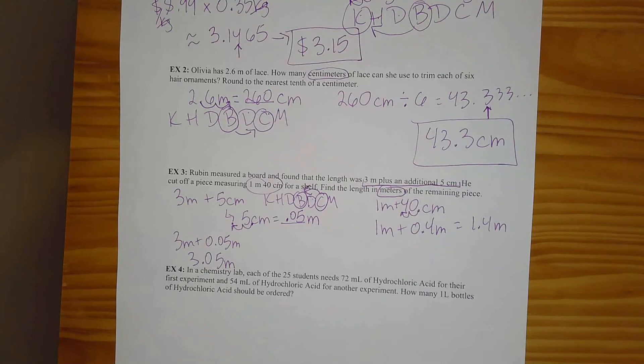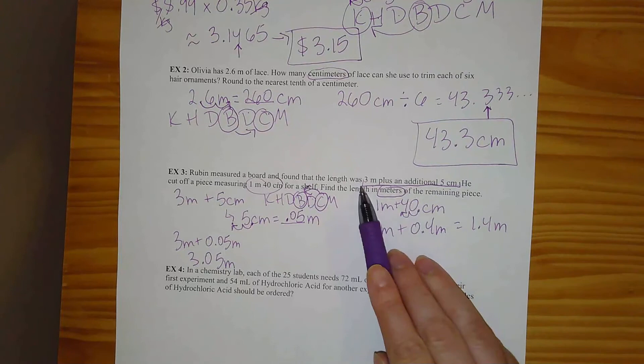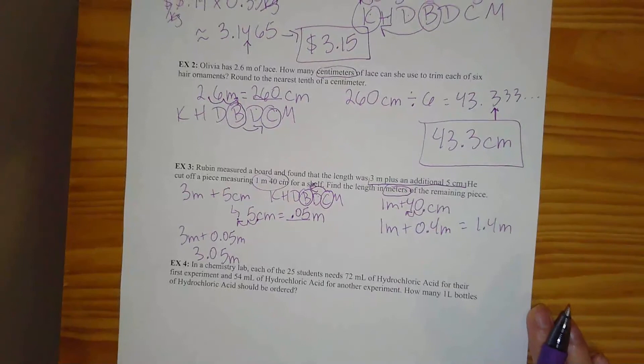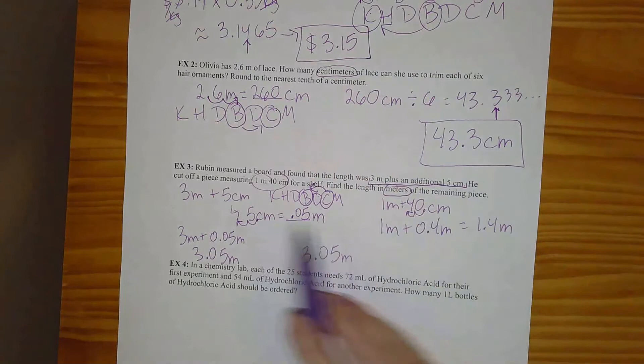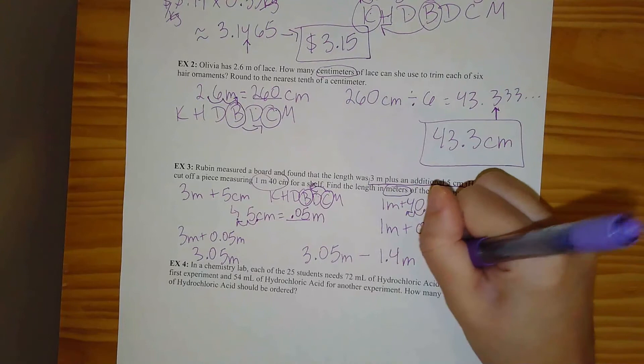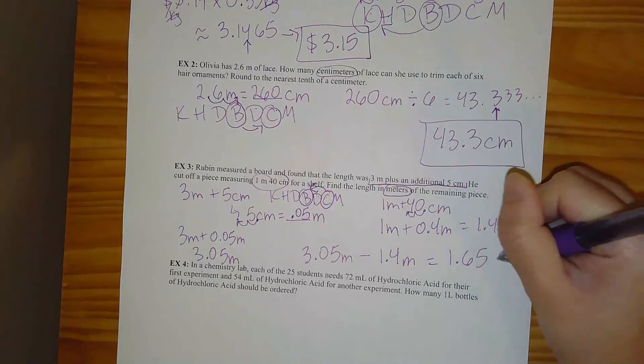Now that everything is in meters, let's look at the actual problem. I want to find the length in meters of the remaining piece. We started with a board that was 3.05 meters, then he cut off 1.4 meters for a shelf — so I need to find what's left. I'm going to subtract 1.4 meters from 3.05 meters, and when I subtract I get an answer of 1.65 meters.